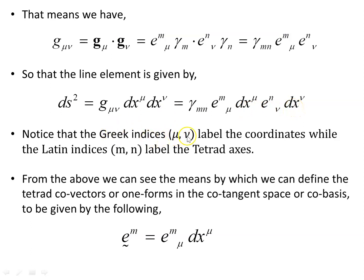The Greek indices mu and nu label the coordinates of the manifold, while the Latin indices m and n label the tetrad axes. So you have the global coordinates of the manifold and then a local tetrad axis at each point on the manifold, with axes labeled by m and n.